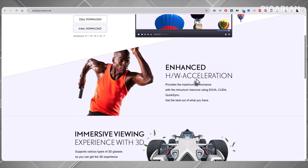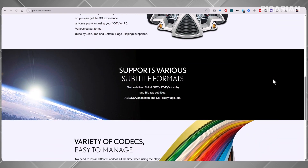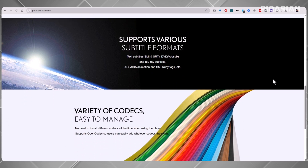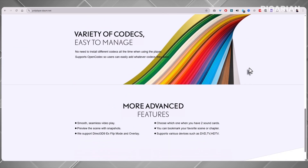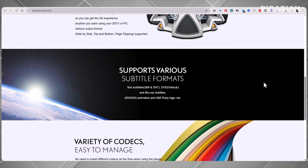This player is laser-focused on performance. It uses tech like DXVA, CUDA, and QuickSync — you don't need to memorize those, but what they mean is this: Pot Player can squeeze every bit of power out of your graphics card to deliver smooth playback, even for huge, high-resolution files. And when it comes to formats, Pot Player is like the Swiss Army knife of players. It supports most popular codecs right out of the box, and if by chance it doesn't, you can add your own through something called Open Codec. That means you'll almost never run into the dreaded 'this file cannot be played' message.